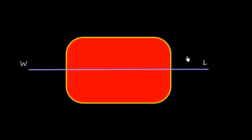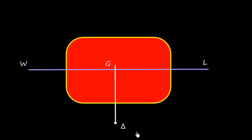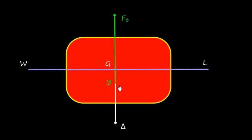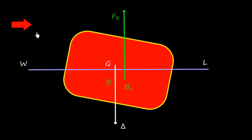Let's take a vessel floating in still water, so the waterline is a straight line. G is the center of gravity, where the total weight of the ship is assumed to act vertically downward, represented by displacement. The underwater volume has a geometrical center called the center of buoyancy (B), and the force of buoyancy acts vertically upward through the center of buoyancy.